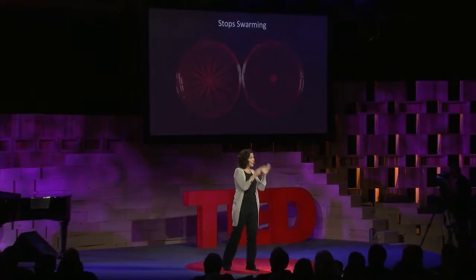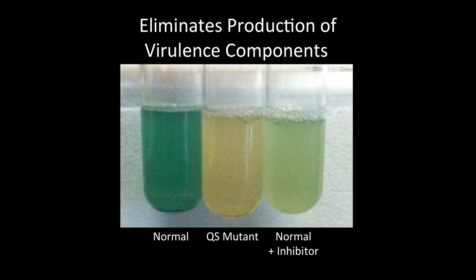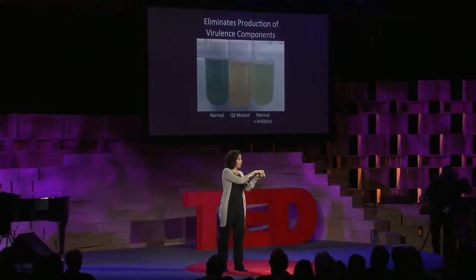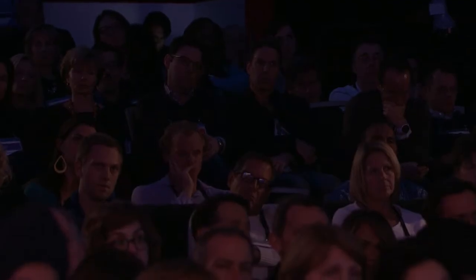The next question is what about the toxins that Pseudomonas secretes? In the left-hand test tube, that's wild-type Pseudomonas doing quorum sensing, and it's secreted these toxins — the bacteria turn green. In the middle test tube, that's a mutant we've made where we knocked out its quorum sensing system, so the bacteria are colorless and can't secrete the toxin. The right-hand test tube shows wild-type Pseudomonas with our inhibitor added, and the inhibitor greatly decreases the ability of Pseudomonas to secrete that green poison.